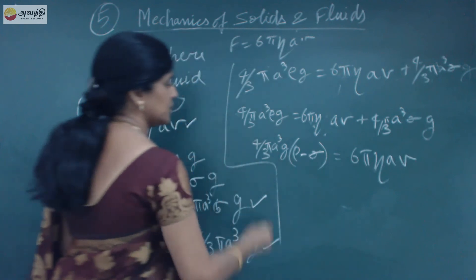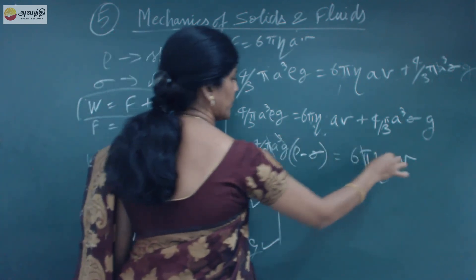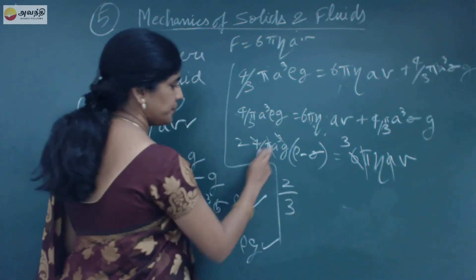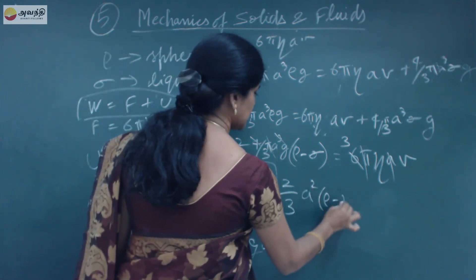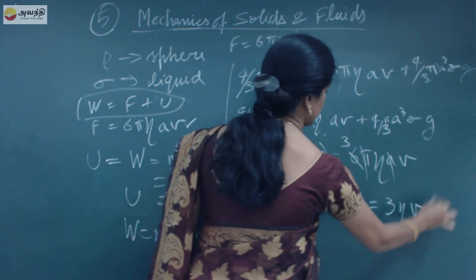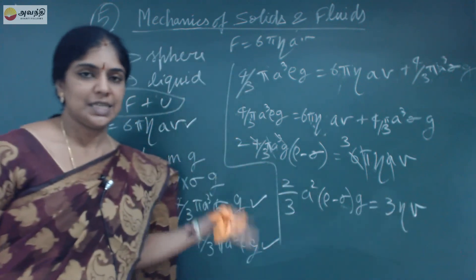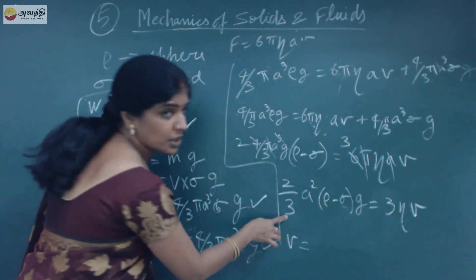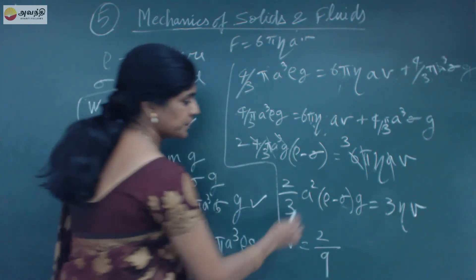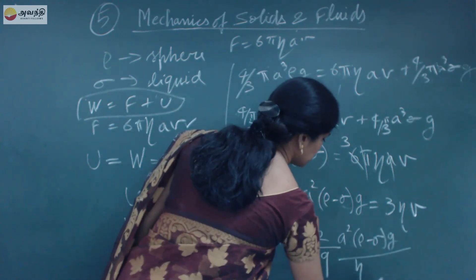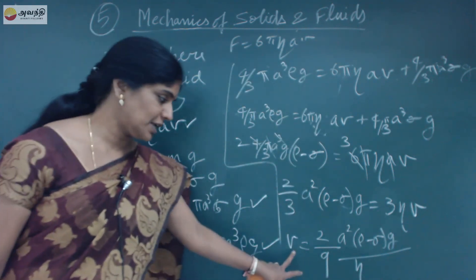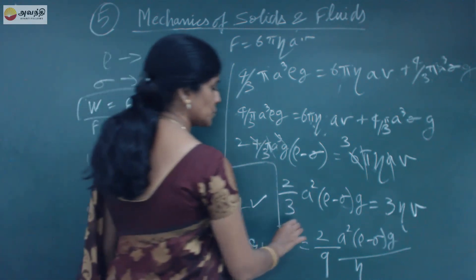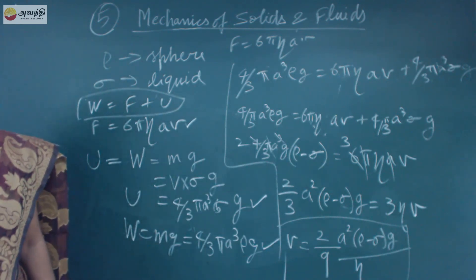Simplifying — canceling π, and noting that 4/3 divided by 6 gives 2/9 — we get (2/3)a²(ρ − σ)g equals 3ηav, so V equals 2/9 × a²(ρ − σ)g / η. This is the terminal velocity formula. By this we can calculate the terminal velocity of a sphere falling through a highly viscous liquid using Stokes' law.